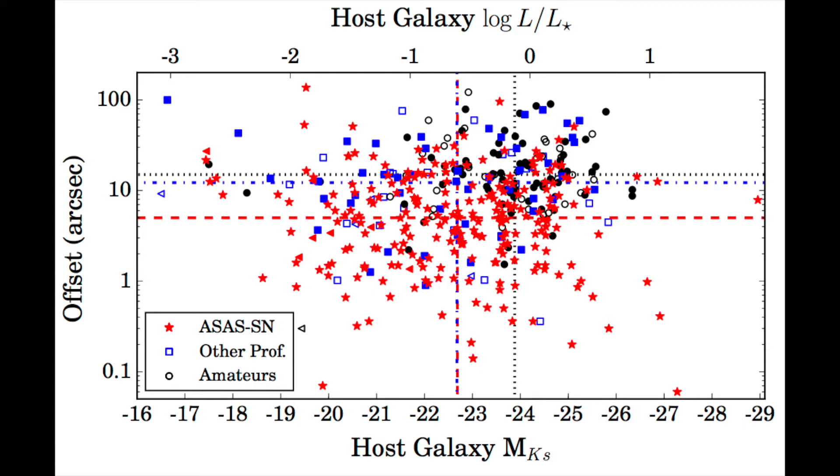While all professional surveys discover supernovae in less luminous hosts than amateurs, ASASSIN clearly is less biased than other professional surveys and amateurs with regards to sources located near to the host galaxy nucleus.